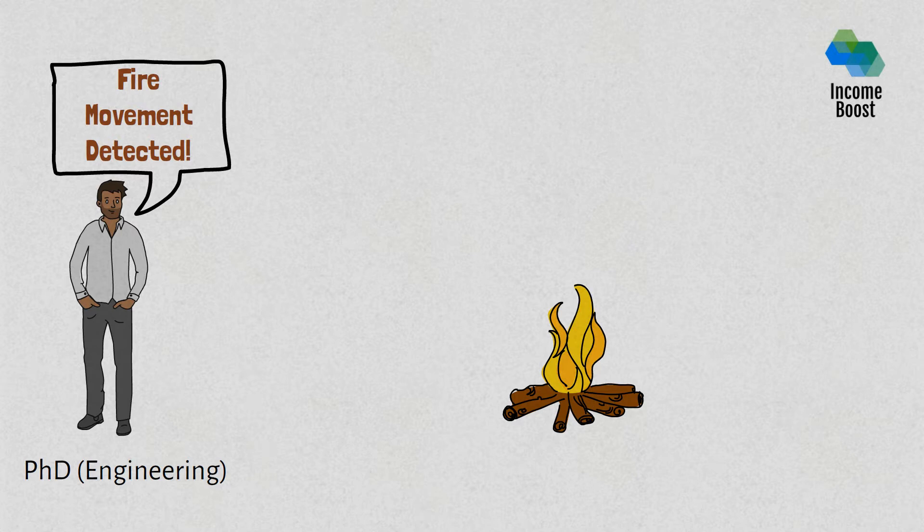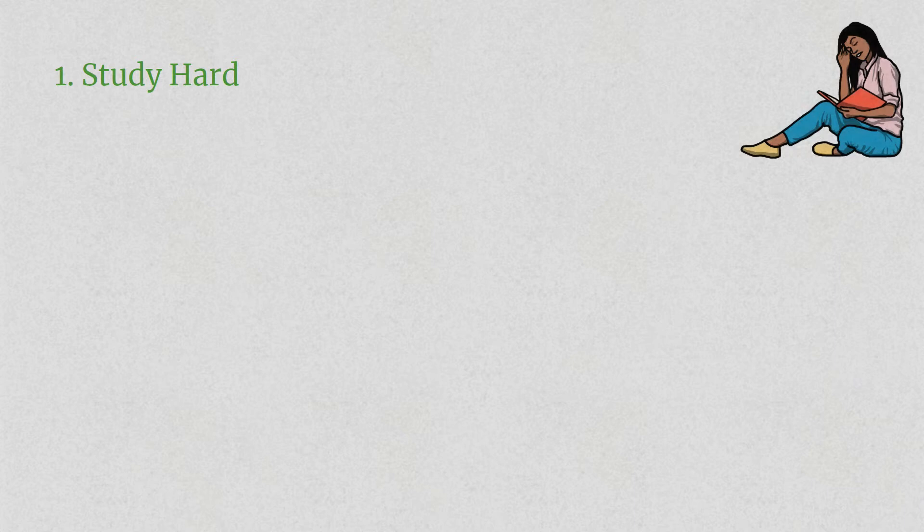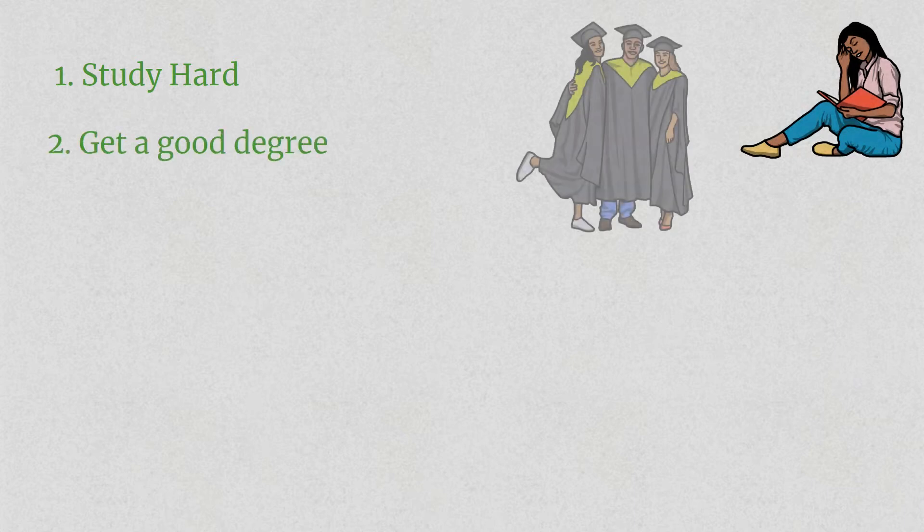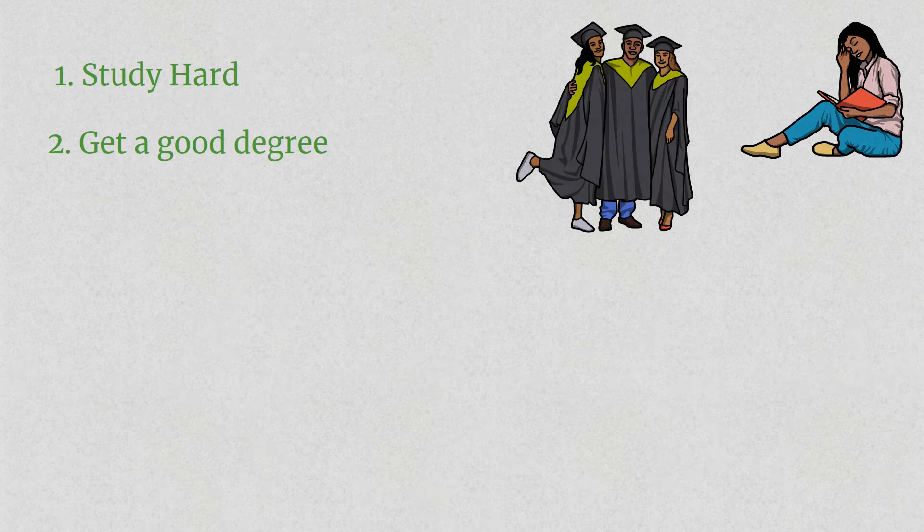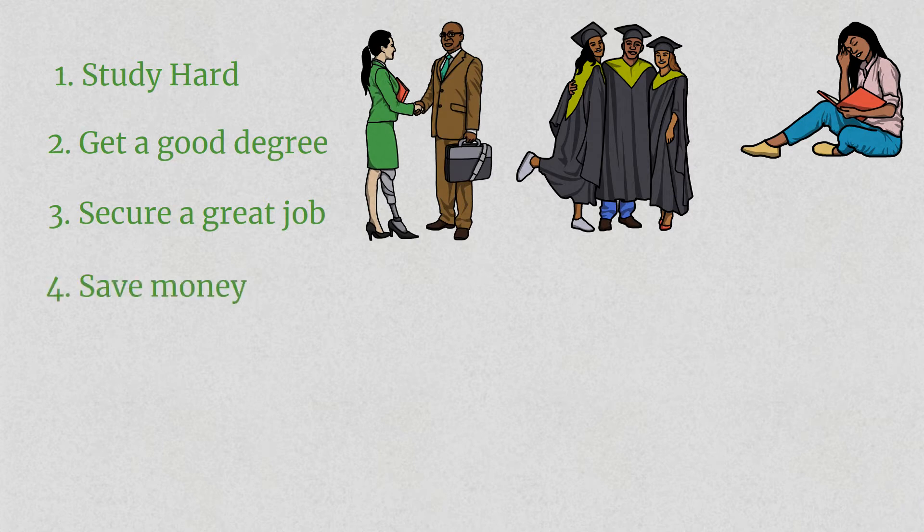I went through life with the same goals most of us have been taught. Number one, study hard, as there's a lot of emphasis on education, and culturally even more so. Number two, get a good degree, and by good I mean one that will eventually earn you a good income. Number three, secure a great job. Number four, save money, with savings defined as basically anything that's left over after your expenses have been paid for.